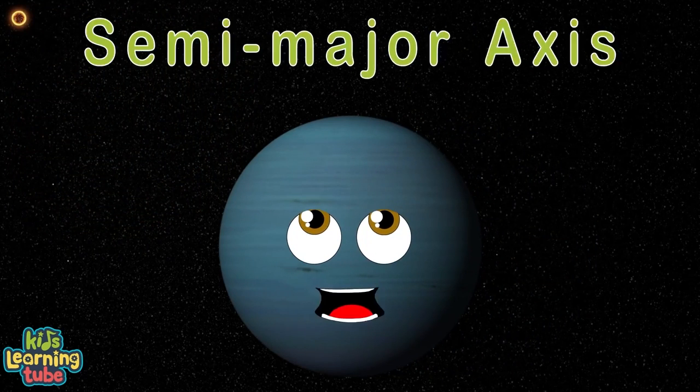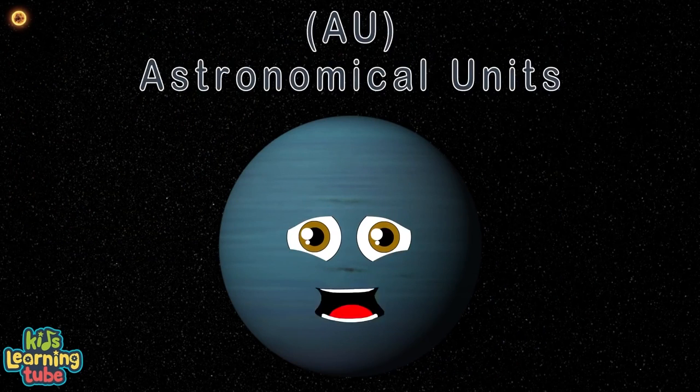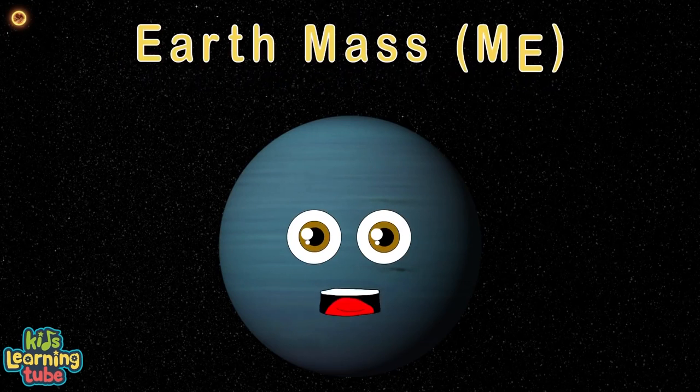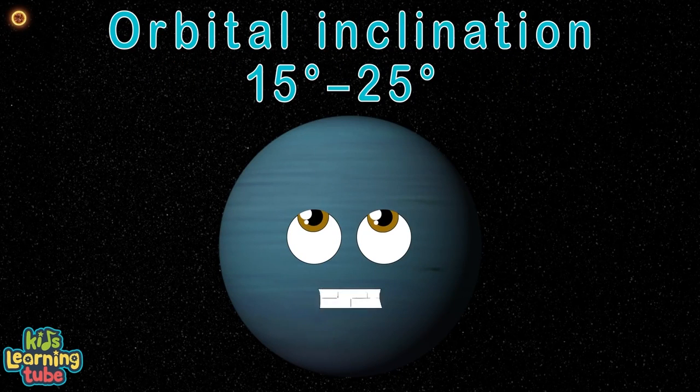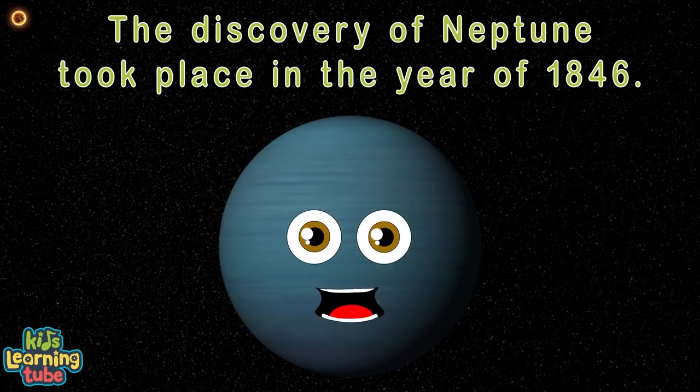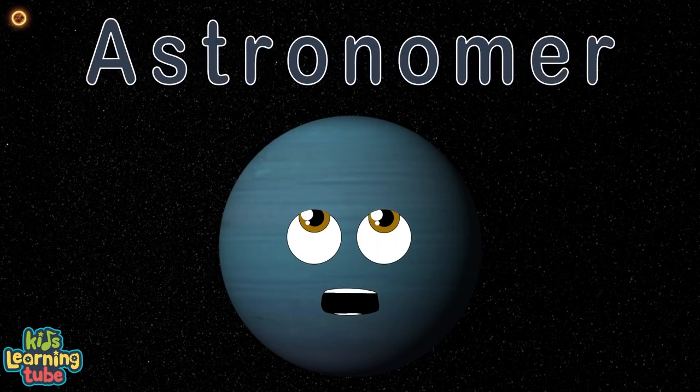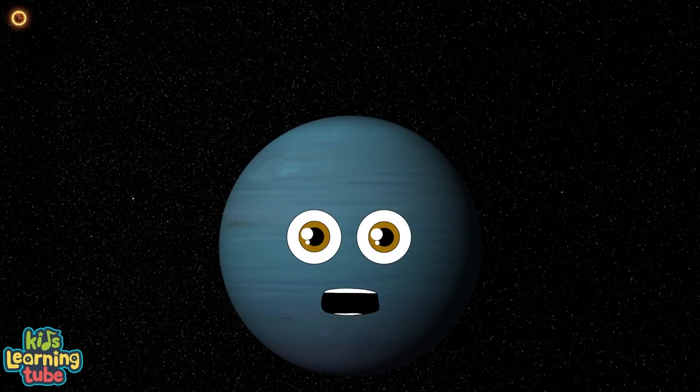My semi-major axis is 400 to 800 AU. AU means astronomical units. My Earth mass is thought to be between 5 to 10. 15 to 25 degrees is my orbital inclination. After the discovery of Neptune in 1846, there's been speculation of another planet that might exist. Maybe you'll become an astronomer and be the first to discover me.